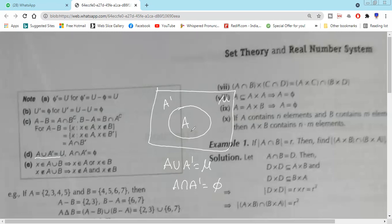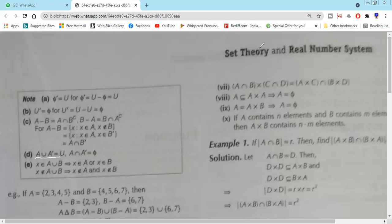If x belongs to A union B, that means x belongs to A or x belongs to B. x does not belong to A union B means x does not belong to A or x does not belong to B. For example: